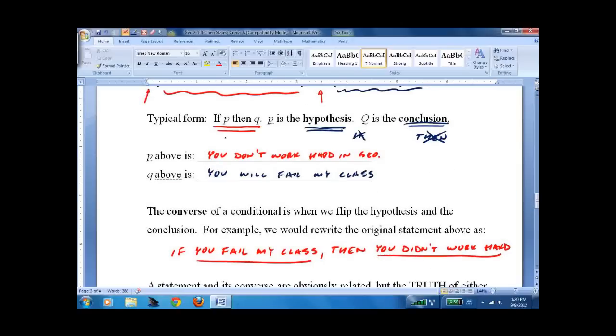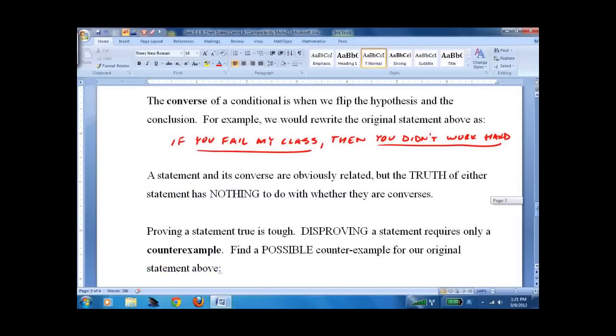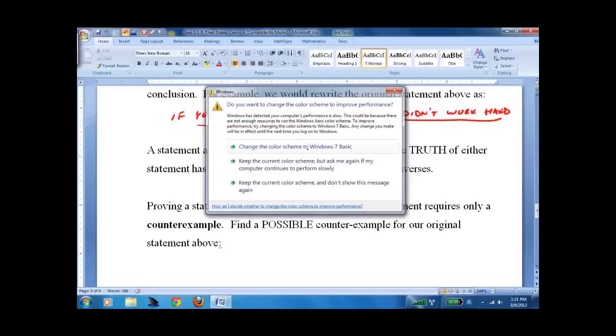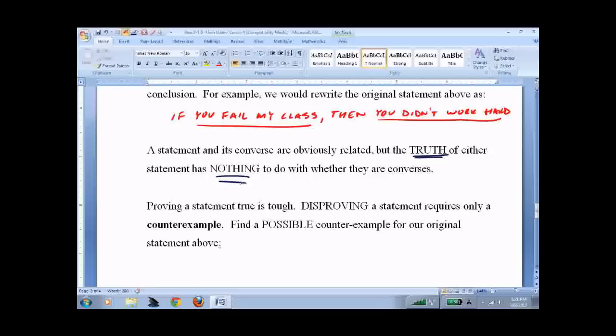Let's assume this first statement - if you don't work hard in geometry, you will fail my class - is true. When we say it's true, that means given the first statement you didn't work hard, you'll get the second: you're going to fail. A converse has nothing to do with the truth of the original statement. I've got two of them going back and forth. If the first one's true, the second one's not necessarily true. In this case it could be, but it's not necessarily true. The truth has nothing to do with whether or not they're converses.